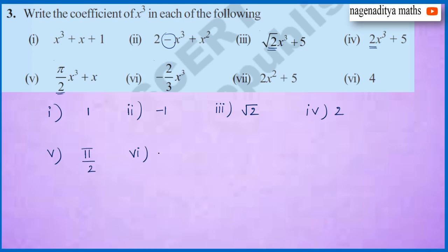In the seventh one, there is no x cube term, so the coefficient of x cube is 0. In the eighth one, this is a constant polynomial and there is no x cube term, so the coefficient of x cube is 0 here.